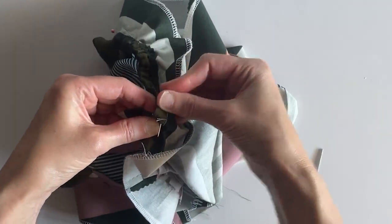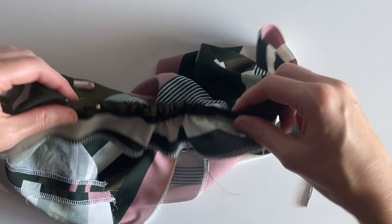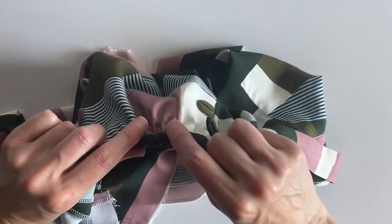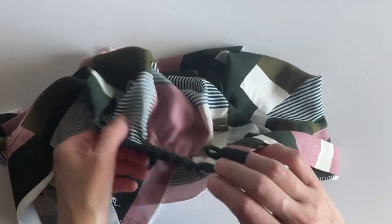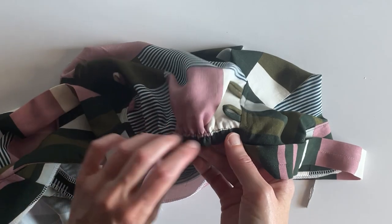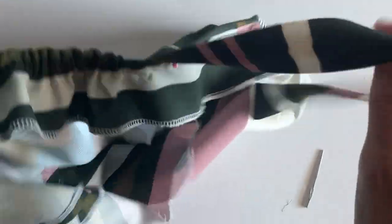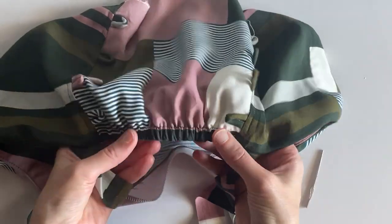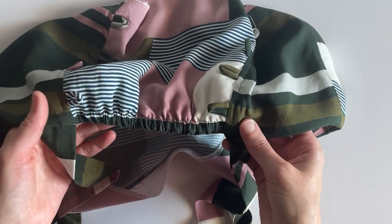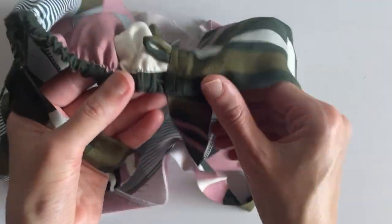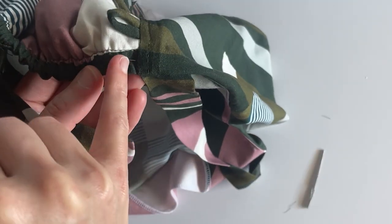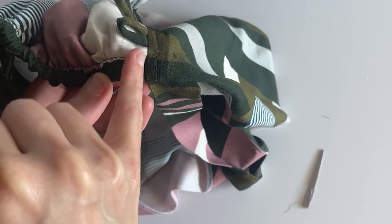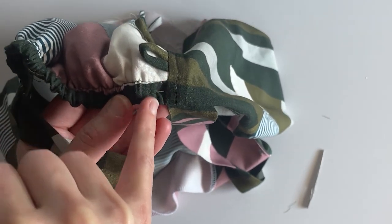I don't have a safety pin handy right now. I recommend trying this on to see how you will like the fit. If you want the elastic to be tighter you can adjust it now. Also you might decide that you want to change the length of the straps, and you would want to do that now as well. I've already tested the fit so I'm going to go ahead and secure my elastic by stitching right over the top of it in the ditch of this seam line.